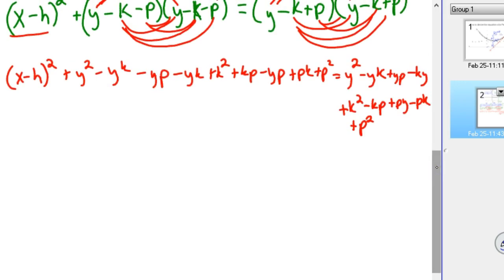So here's the other thing, we're going to move the Y squared together, so you would subtract Y squared from both sides, and those would cancel out. Minus YK and minus YK, those are the same, so those are going to cancel out. Minus YP, does that cancel out on the other side? It does not, because there's a plus YP, so those wouldn't cancel. Minus YK, minus YK, those would cancel. K squared and K squared would cancel. KP and minus KP doesn't cancel, minus YP and PY doesn't cancel, plus PK, minus PK doesn't cancel, but the P squareds cancel.